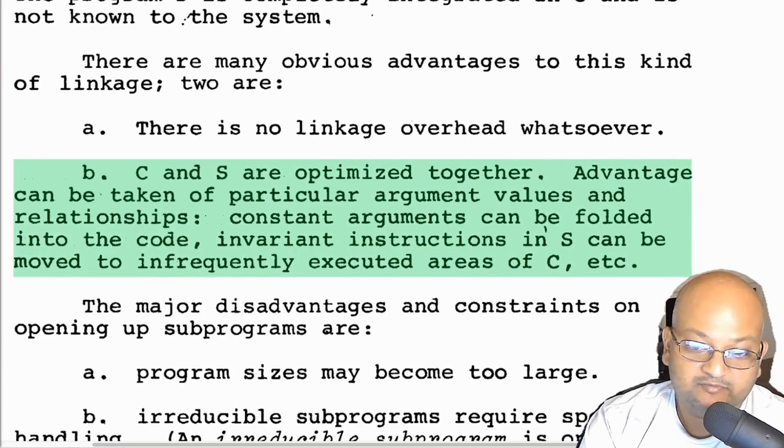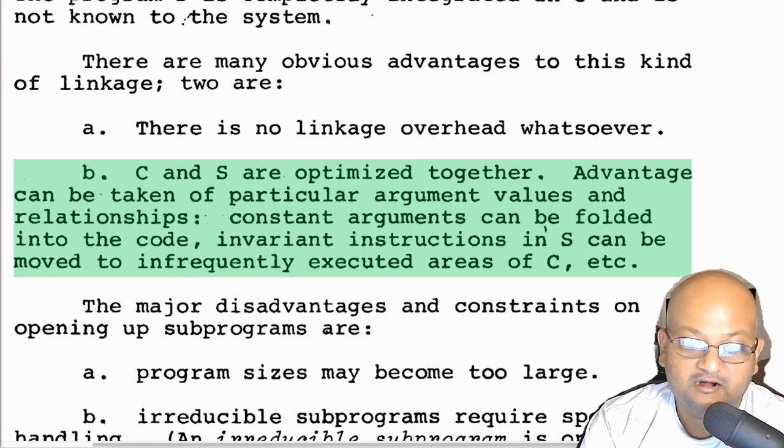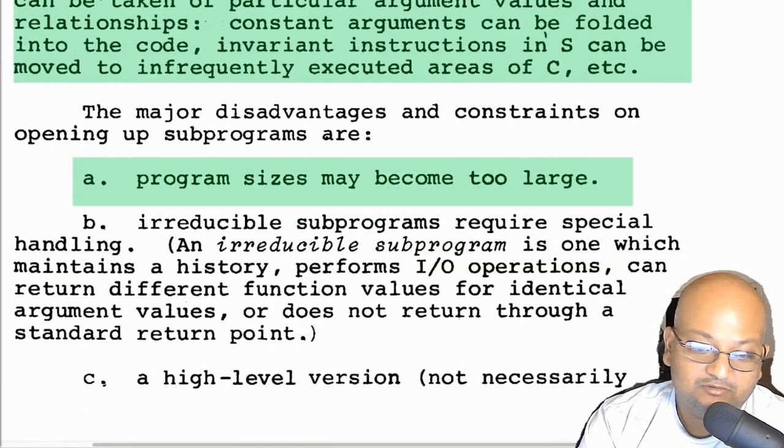The biggest advantage of doing this is that you can now optimize the two calls together. Since their bodies have been merged, you have a larger body of code to optimize together, and you can take advantage and do all sorts of optimizations that are specific to the context of this calling pair. For example, if you only call S with a particular argument value or you have various constant arguments, all of those can get folded in and then lead to many optimizations which you would not have been able to do if you were simply calling S as a separate procedure.